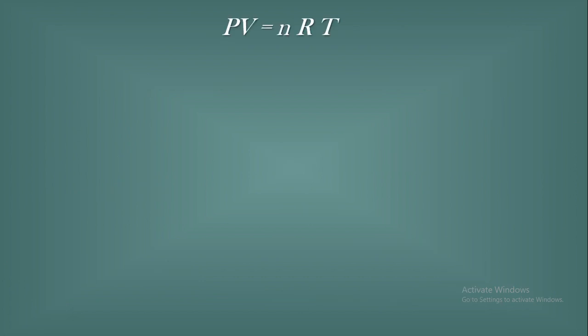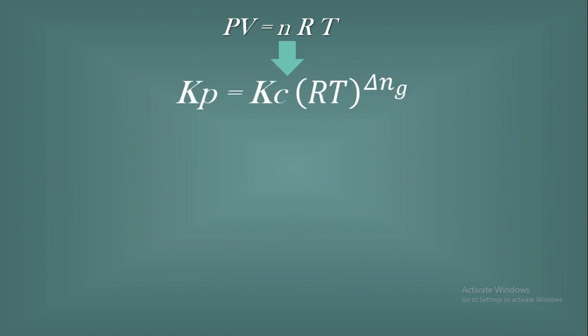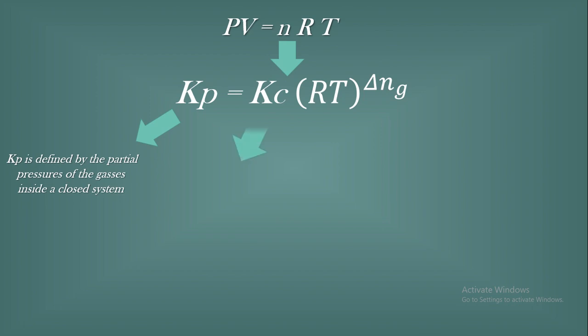The equation we'll use is PV = nRT. From this, the relationship between Kc and Kp is derived, giving us the final result: Kp = Kc × (RT)^ΔnG. Here, Kp represents the partial pressure of gases inside a closed system. Kc is defined by molar concentration. R is the gas constant with a value of 0.08206, and T is temperature in Kelvin.